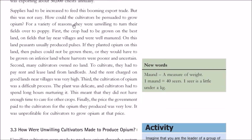With export trade booming, opium supplies needed to increase. But how could Indian cultivators be persuaded to grow opium? There were four reasons they were unwilling. First, opium required the best, most fertile land — land near villages that was well-manured — the same land where peasants grew pulses. Growing opium there would make pulse production inferior.